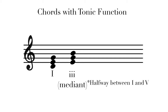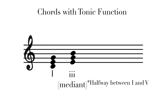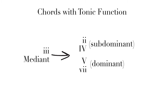This is why in Schenkerian analysis, the III chord is just considered an extension of the tonic. Generally speaking, the III chord in a major key can go to either a subdominant chord or a dominant chord. It is often used to lead us to the IV chord, as the root of the III and IV chord are only a half step apart.